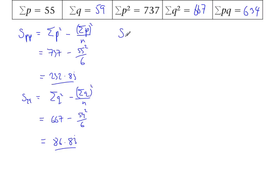We're almost there. Last little bit, Spq. So I need to work out the sum of all the PQ values and subtract sum of P times sum of Q divided by n. So 634 minus 55 times 59 divided by 6, and there we get 93.16. That's the trouble with having six bits of data, you get lots of recurring decimals.